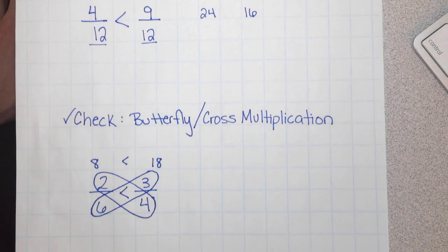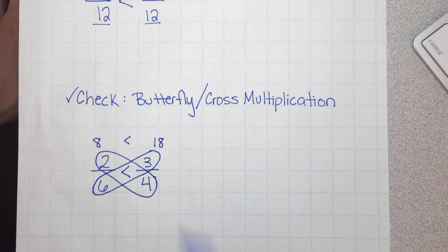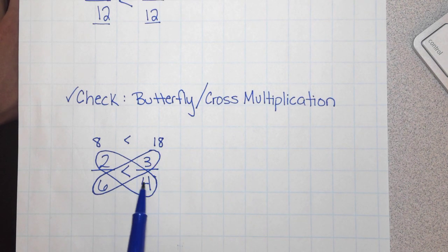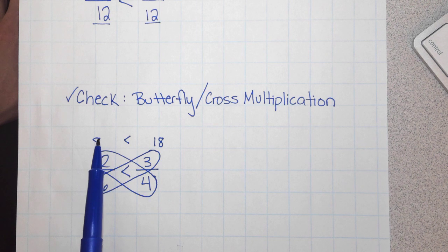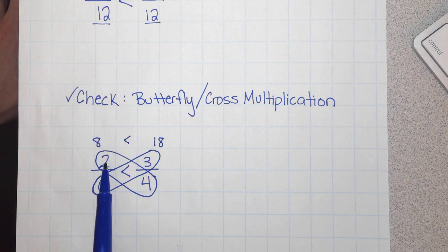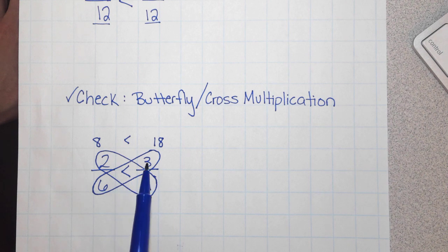After I was done, I then checked it with cross multiplication by multiplying 6 times 3 and got 18 and 4 times 2 and got 8. 18 is greater than 8, so 2 sixths is less than 3 fourths.